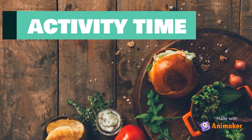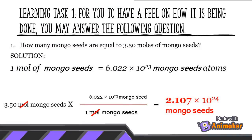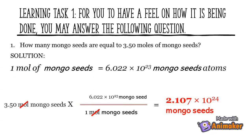Let's do the learning tasks. Learning task 1. Number 1: how many mongosids are equal to 3.50 moles of mongosids? Remember, 1 mole of mongosids is equal to 6.022 × 10²³ mongosid atoms. Answer: 2.107 × 10²⁴ mongosids.